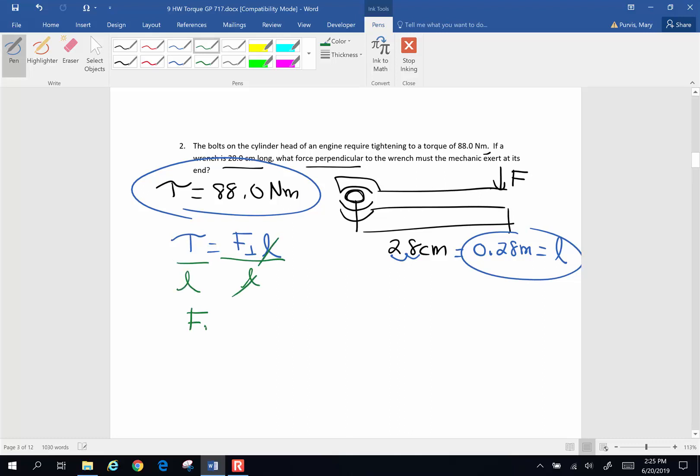And that's going to mean my perpendicular force will be the torque divided by the lever arm. The torque is 88 newton meters divided by the 0.28 meters. Meters will cancel meters.